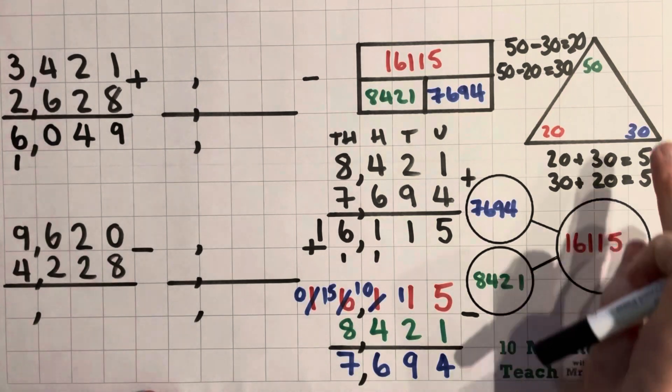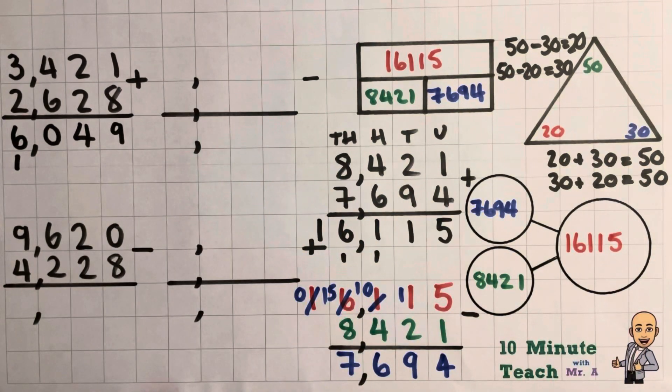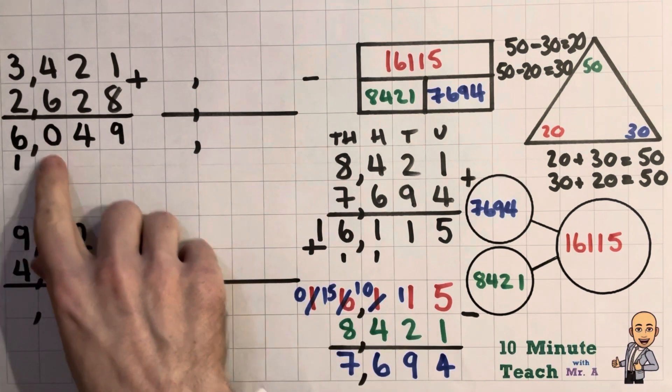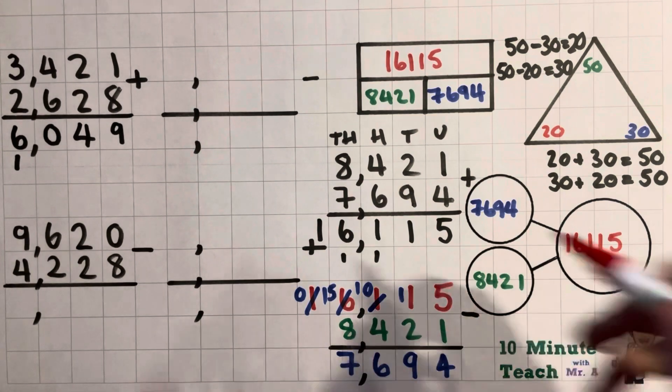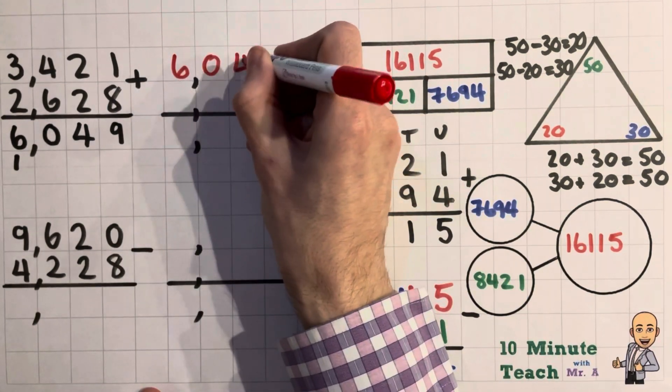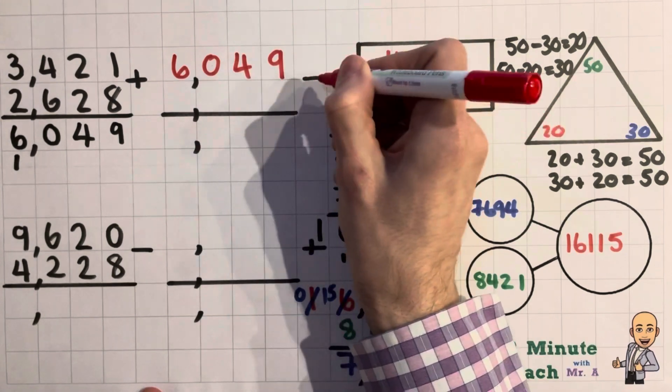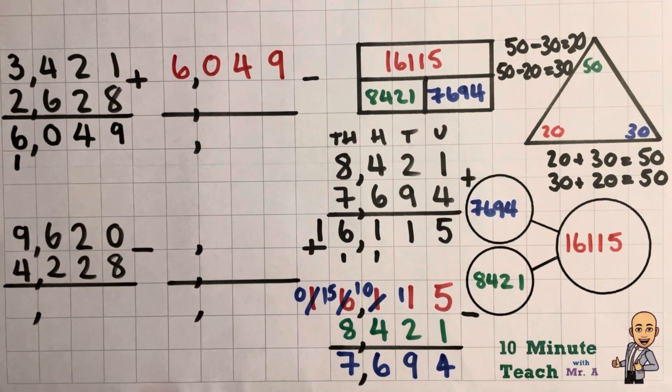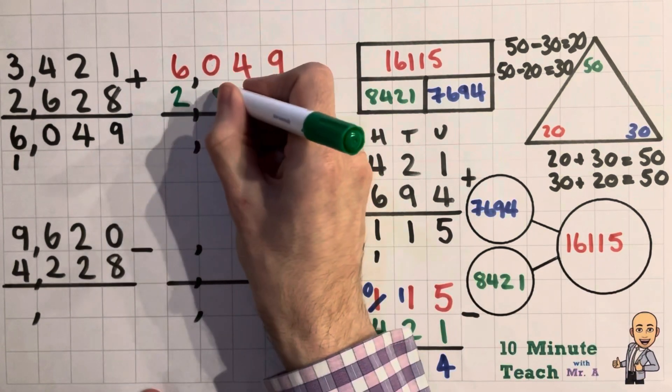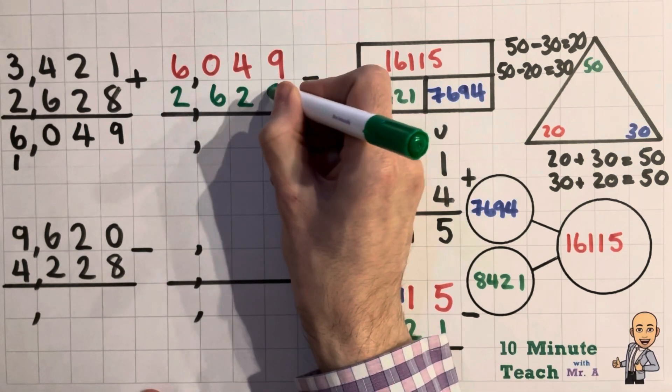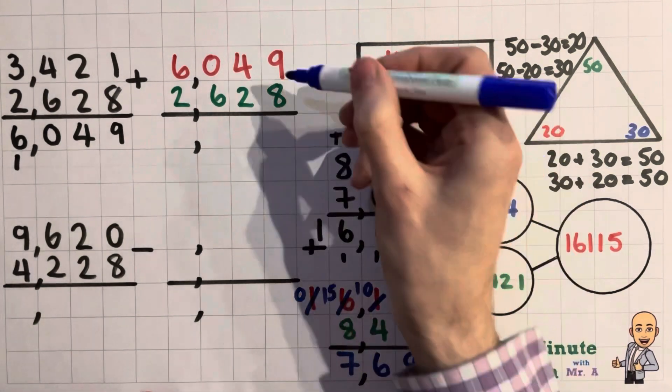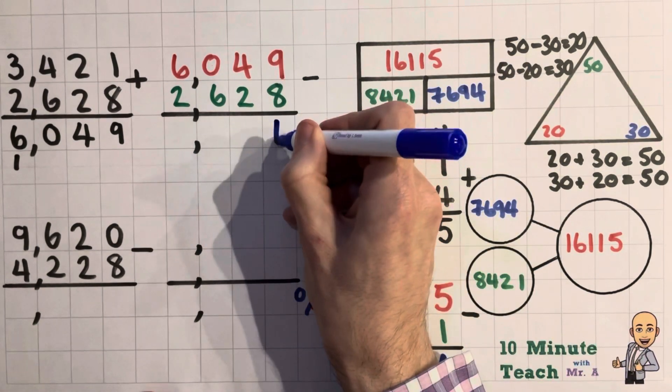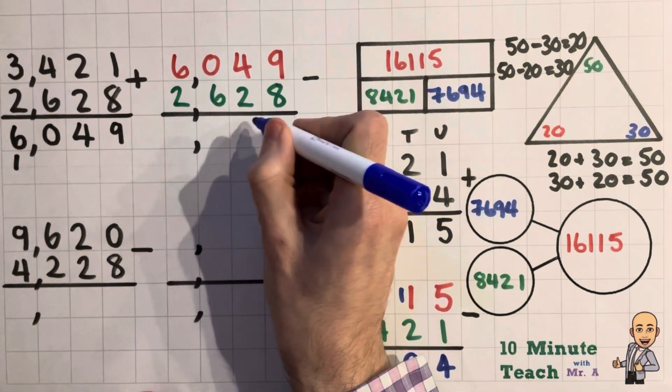So let's make this a subtraction. So like we said our largest number must come first always in a subtraction. So we'll take that from our addition and put it at the top. And we'll start off with 6,049. There we go. And we are subtracting, I'm going to pick the middle number this time. So let's subtract the middle number this time, 2,628. And if my working out is correct, I should end up with that top number. So let's have a little go.